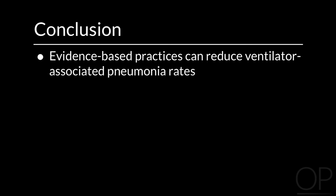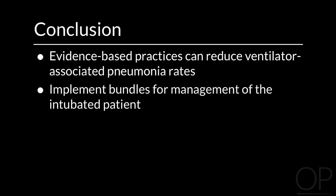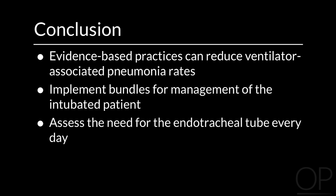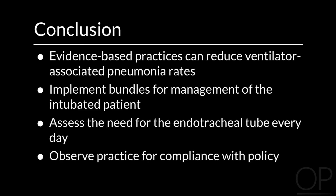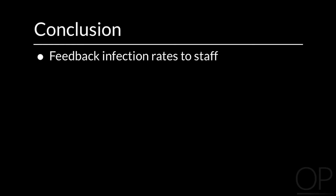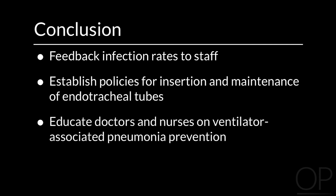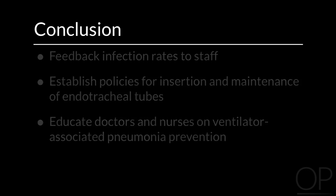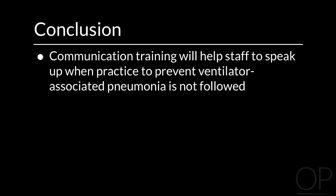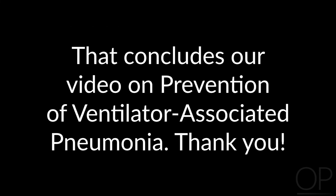Evidence-based practices can reduce ventilator-associated pneumonia rates. You should implement bundles for the management of the intubated patient, assess the need for the endotracheal tube every day, observe practice for compliance with policy, provide feedback on infection rates to staff, establish policies for the insertion and maintenance of endotracheal tubes, educate doctors and nurses on ventilator-associated pneumonia prevention, and use communication training to help staff speak up when prevention practices are not followed. That concludes our video on prevention of ventilator-associated pneumonia.